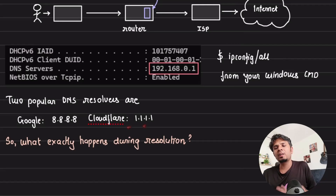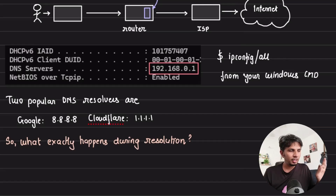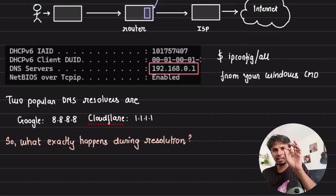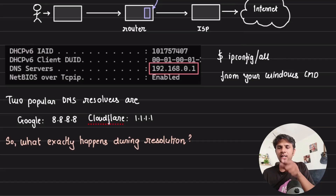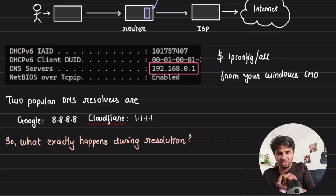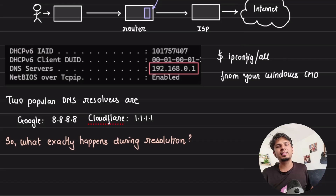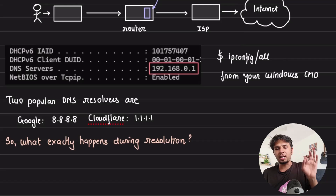You can change your DNS resolver to a popular one like Google's DNS resolver at 8.8.8.8 or Cloudflare's at 1.1.1.1. When the request goes to the DNS resolver, if it has the IP address cached it sends it back immediately; if not, it performs the full resolution process, caches the IP address, and sends the response back to the user.